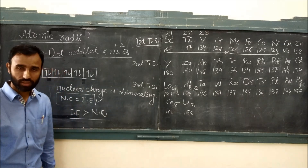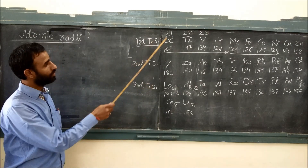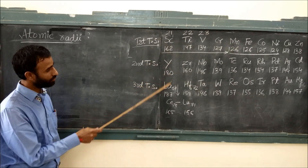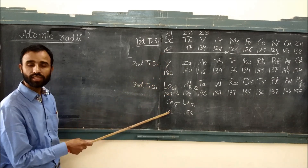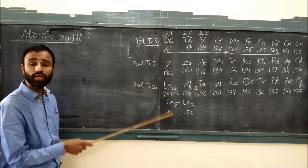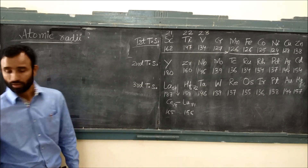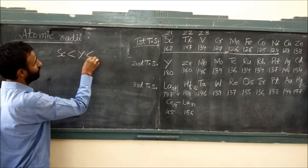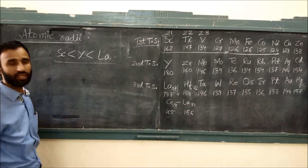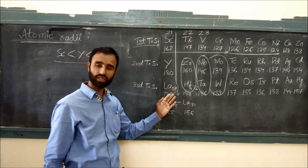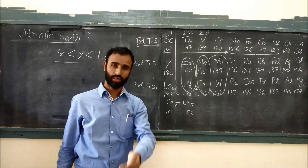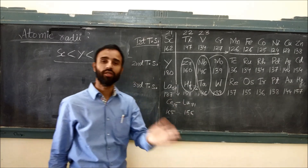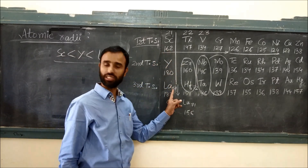Along the series this is the trend. As we go down the group — from scandium to yttrium, there is an increase in size; from yttrium to lanthanum, again there is an increase in size. So scandium is smaller than yttrium, which is smaller than lanthanum. The simple explanation is that as we go down the group, the number of shells increases. The increase in number of shells is dominating over nuclear charge, and that is why size increases.